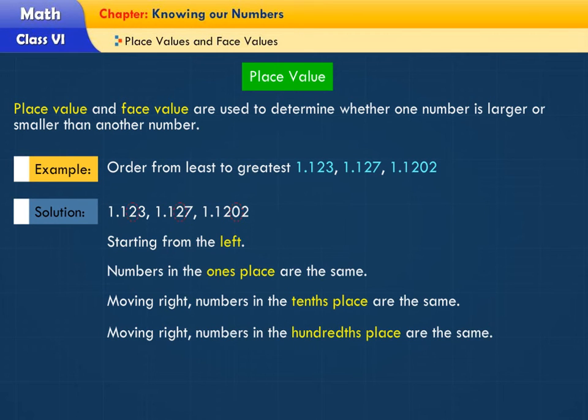Moving right, numbers in the hundredths place are the same. Moving right, numbers in the thousandths place are 3, 7, and 2.